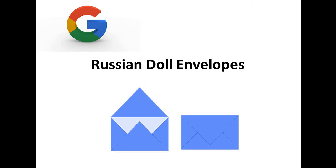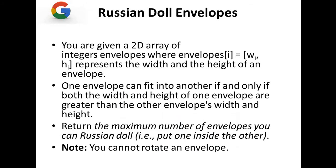We are given a 2D array of integers called envelopes, where envelopes[i] equals [wi, hi], and wi and hi are the width and height of the envelope. One envelope can fit into another if and only if both the width and height of one envelope are greater than the other envelope's width and height. We need to return the maximum number of envelopes we can Russian doll — that is, put one inside the other.